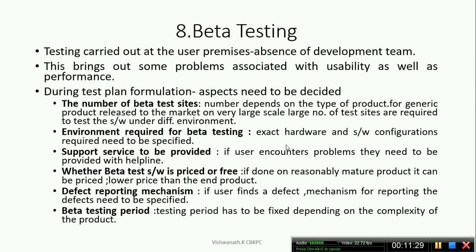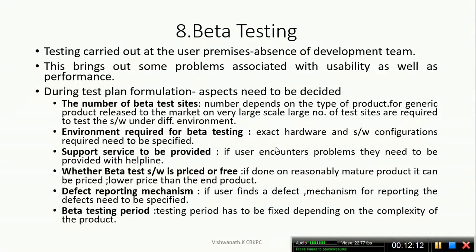Next is Beta Testing. Beta Testing is carried out at the end user's premises — at the client site — in the absence of a development team. Unlike Alpha Testing, which is conducted in the presence of the development team, Beta Testing is performed at the user environment without the development team present.